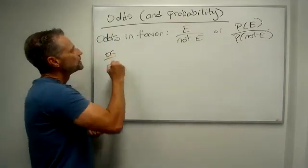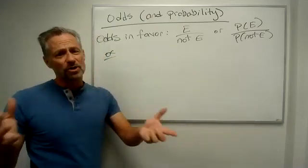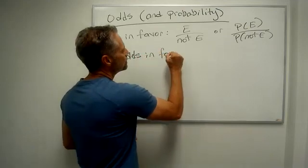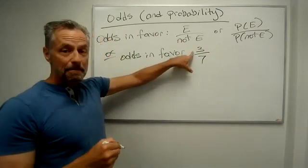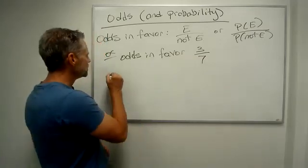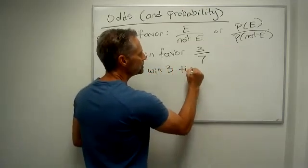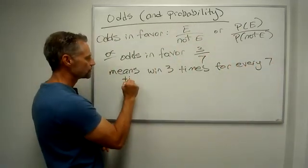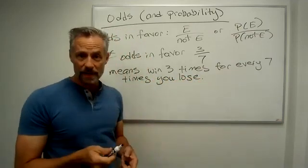For example, say the odds in favor of a horse winning, or you winning some prize, or making a basket, are 3 to 7. That means you're going to win three times for every seven times you lose. So it's just the opposite of what we had before.